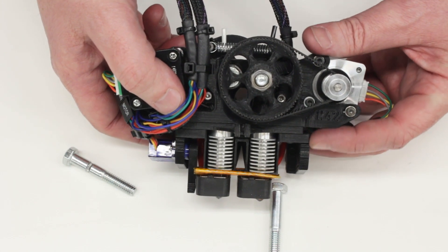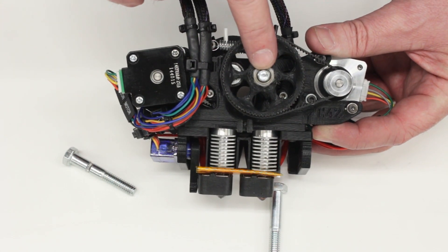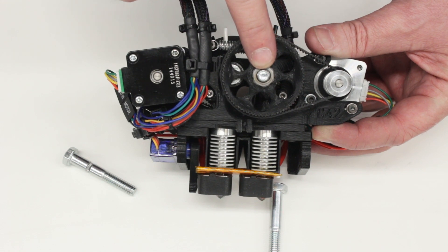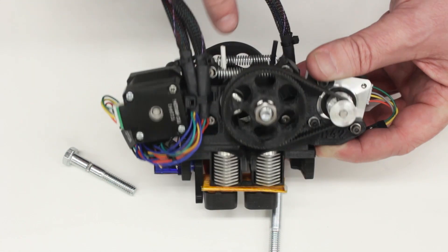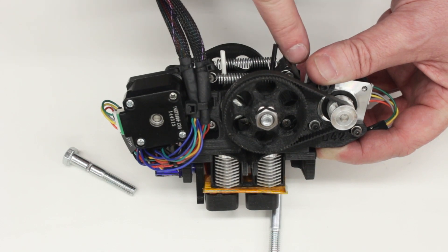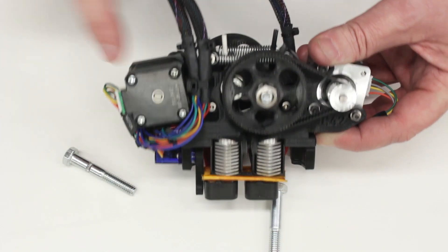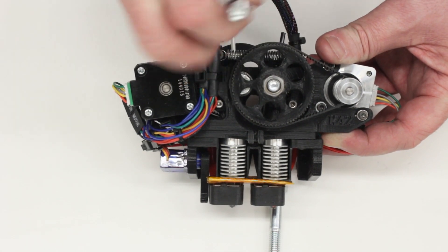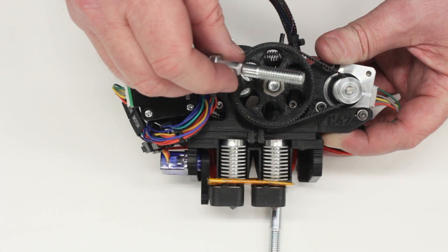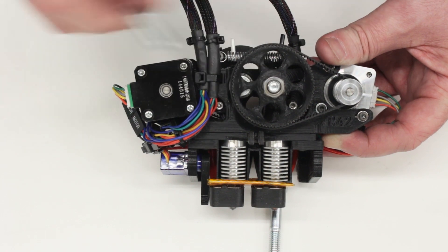Now you can see in this, there are two hobbed bolts, one for each filament. There's one here driven by this pulley. And you can just see the head of the second one, which is driven by a pulley on the other side, driven by another motor. And so these bolts sit inside and have teeth on the side that engage the filament and force it down in.